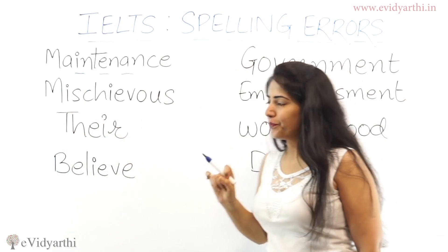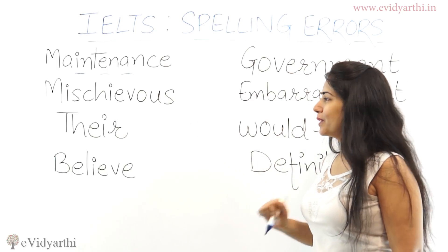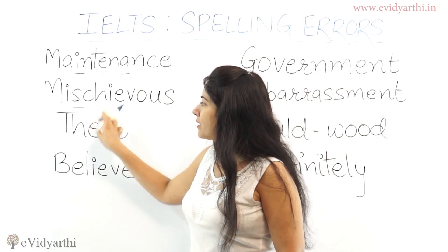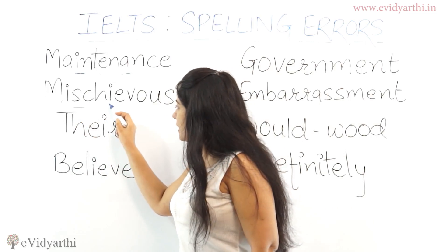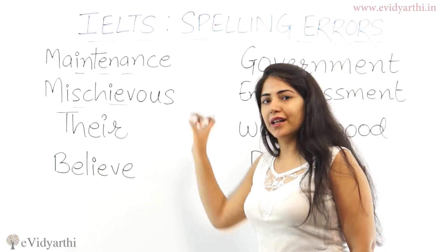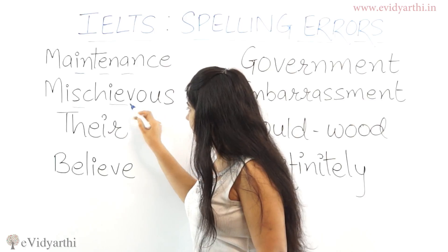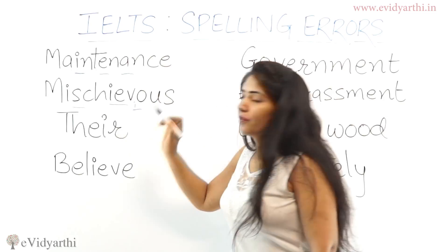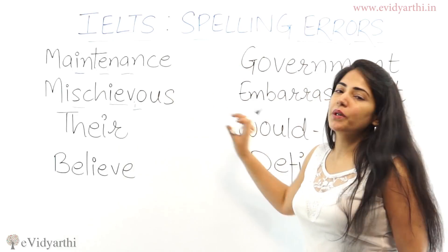Next is 'mischievous.' Can you guess the most common mistakes here? Mostly, instead of a single S, people use a double S, which is a mistake. Also, 'IE' — this is a very common mistake. Instead of writing 'IE,' people often write 'EI,' which is incorrect. The third mistake is that after the B, people often insert an extra 'I,' which is also incorrect. So there are three common mistakes in 'mischievous.'